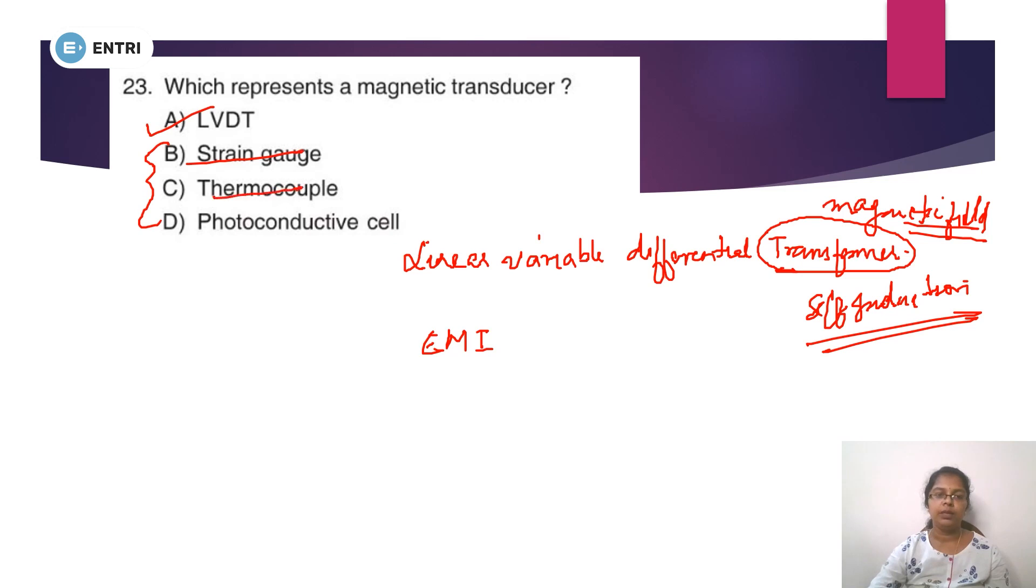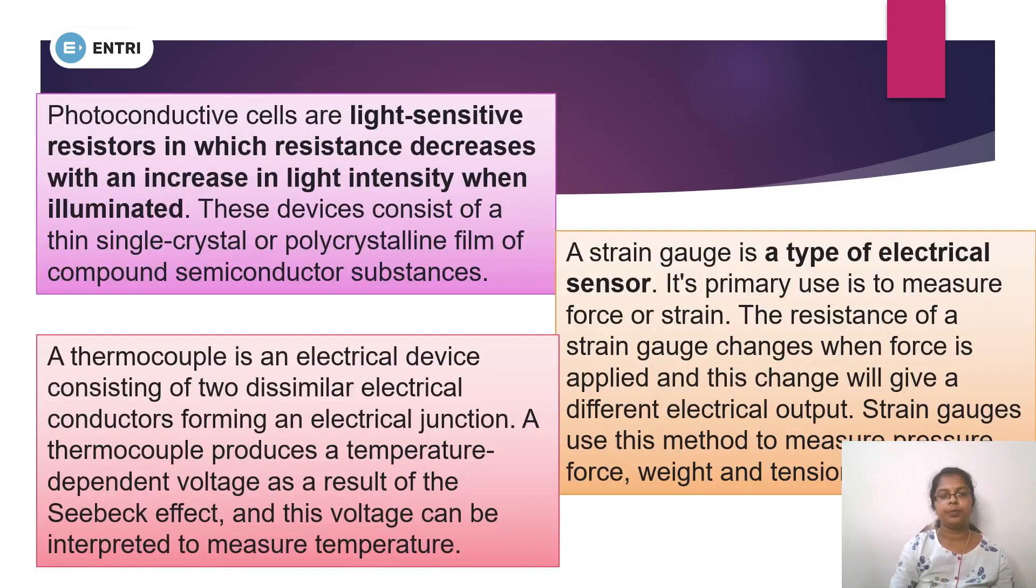Strain gauge, thermocouple, photoconductive cell. Photoconductive cells are light-sensitive resistors in which resistance decreases with an increase in light intensity when illuminated. When light falls, light intensity increases, resistance in photoconductive cells decreases. So this is light energy converted into electrical energy - that is a transducer. These devices consist of a thin single crystal or polycrystalline film of compound semiconductor substances.